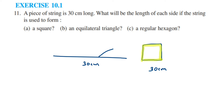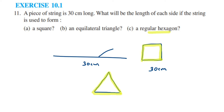The same thing goes for the equilateral triangle and the regular hexagon. For the equilateral triangle, they have used the same string of 30 cm, so the perimeter of the equilateral triangle also becomes 30 cm, and similarly for the regular hexagon. So we have the perimeter of each shape as 30 cm, and using that we have to find each side.